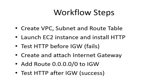Step four: we'll create and attach an Internet Gateway to our VPC. Step five: we'll update the route table by adding a default route — 0.0.0.0/0 — pointing to the IGW. And finally, in step six, we'll test the HTTP connection again. This time, the web page will load successfully, proving that the Internet Gateway is working as expected.